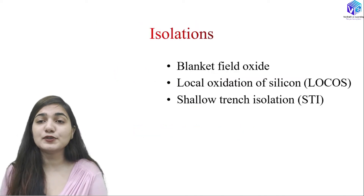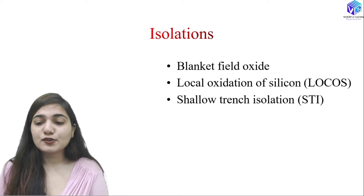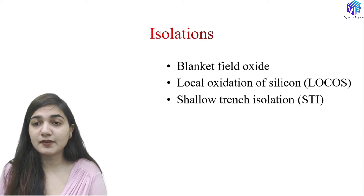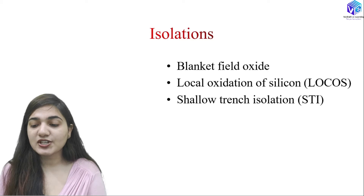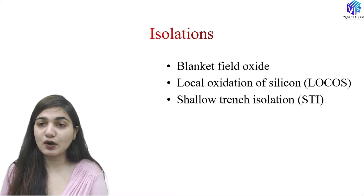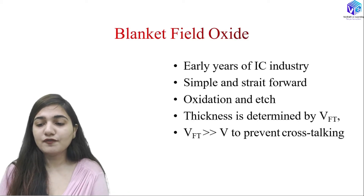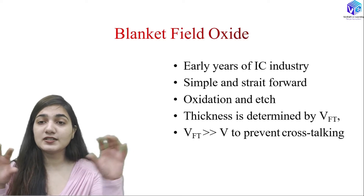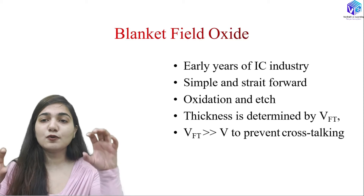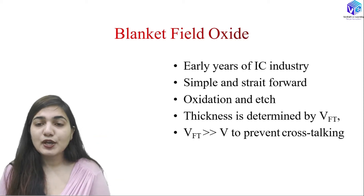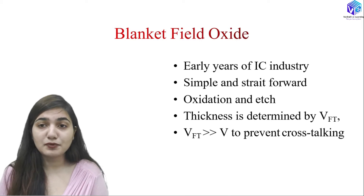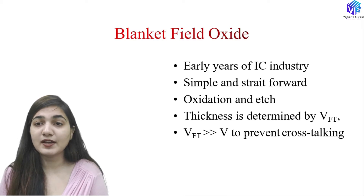We are also going to see the various types of isolation formation. There are three types: first is blanket field oxide, after that we have local oxidation of silicon which is also called LOCOS, and after that we have shallow trench isolation which is called STI. All of them are very important — they isolate two transistors, two MOSFETs, or any two components present on the chip.